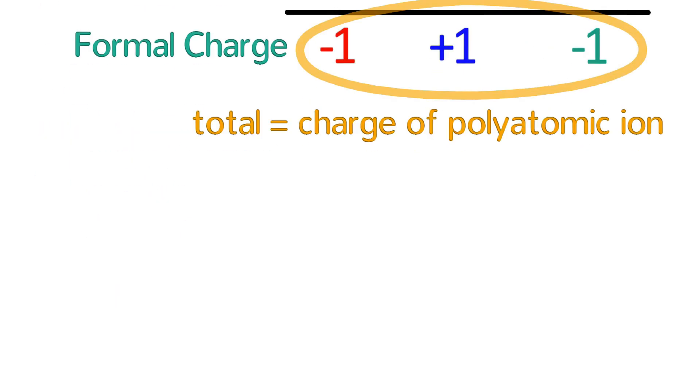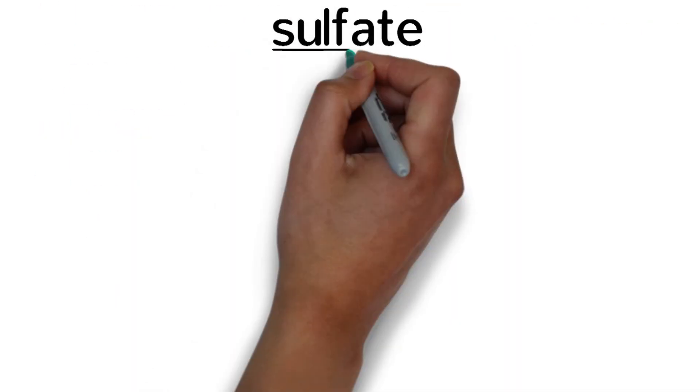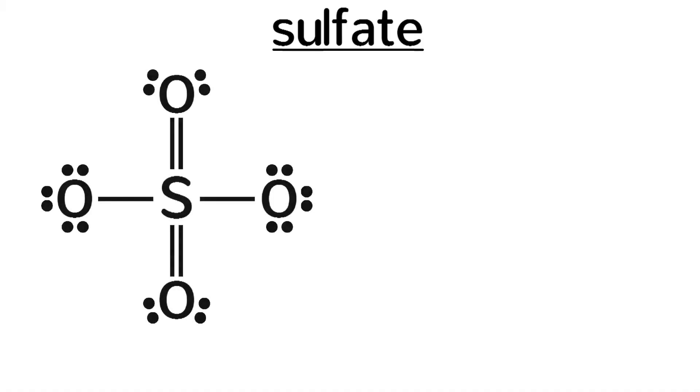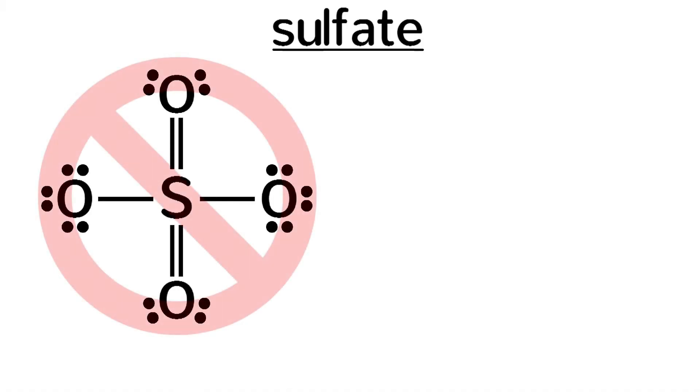Another interesting polyatomic ion to look at is sulfate. On the internet, most searches would have you believe that the Lewis structure of sulfate is this. However, that is not the correct structure.